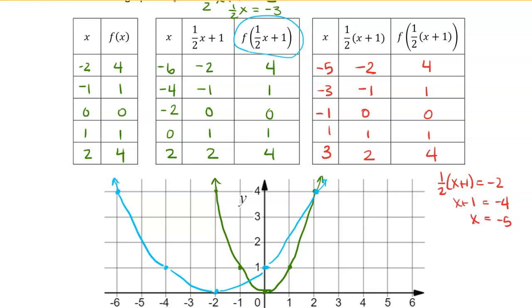Now let's plot those points. We have (−5, 4), (−3, 1), (−1, 0), (1, 1), and (3, 4). So this is the graph of f of one-half times the quantity x plus 1. Now you can see that we're getting the shift we expect — a shift to the left by 1, and a stretch by a factor of 2.